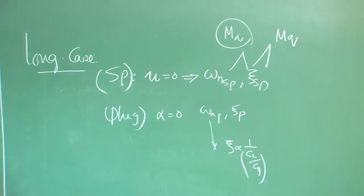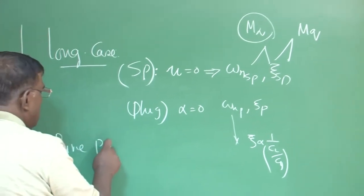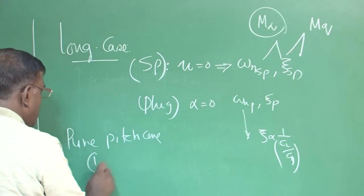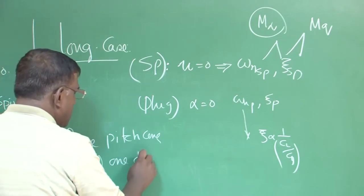For phugoid, we have seen for a glider type without any engine and all, this short period goes inversely with C_L by C_D. So if C_L by C_D is large, phugoid damping is less.